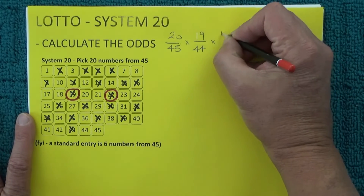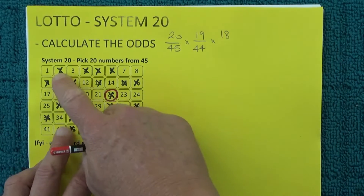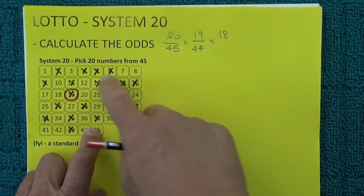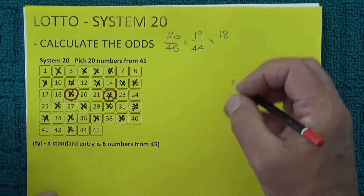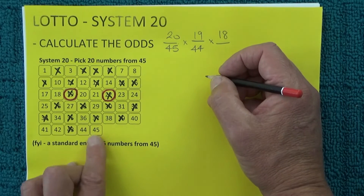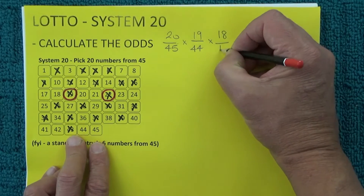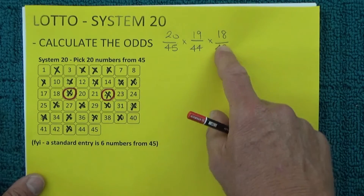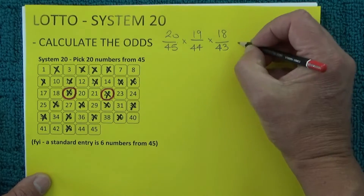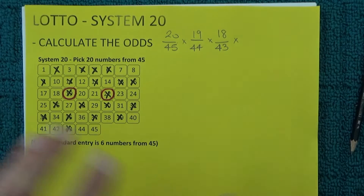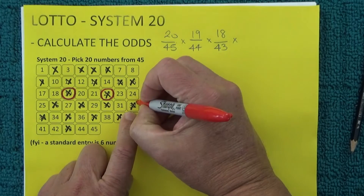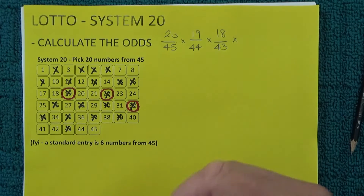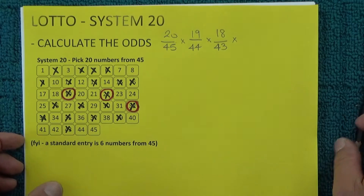When the third number is drawn, you're left with 18 boxes with a black X — 18 numbers that haven't been matched — and two numbers have already come out of the barrel, leaving 43 numbers left in the barrel. So you've got 18 chances in 43 of matching the third number drawn. We'll assume 32 was the third number and mark it off.